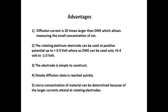The advantage of the rotating platinum electrode is that the diffusion current can be about 20 times larger than that of a normal dropping mercury electrode, allowing determination of very small concentrations. A higher positive potential of up to +0.9 V can be applied, whereas with a dropping electrode, you cannot go beyond +0.4 V. The electrode is simple in construction, steady-state diffusion is reached quickly, and micro concentrations of materials can be determined due to the larger current.